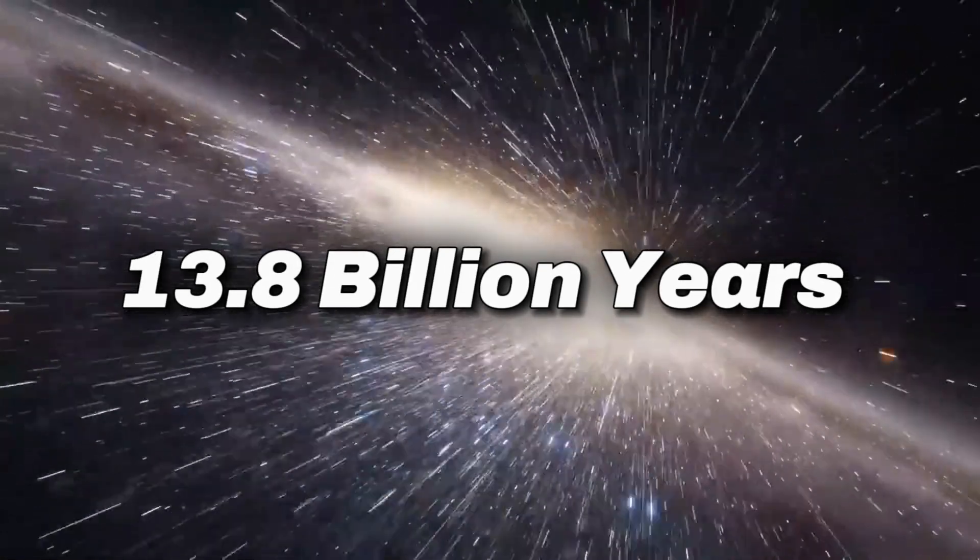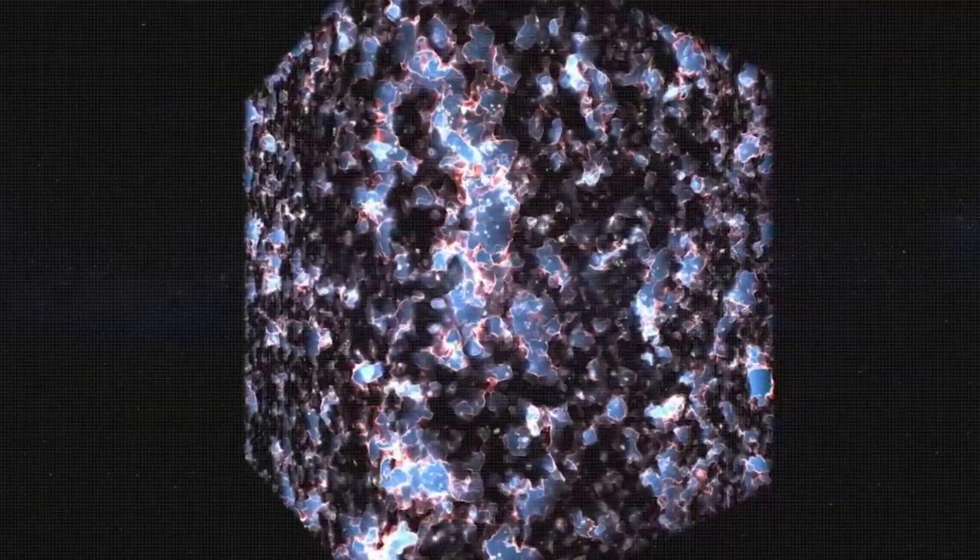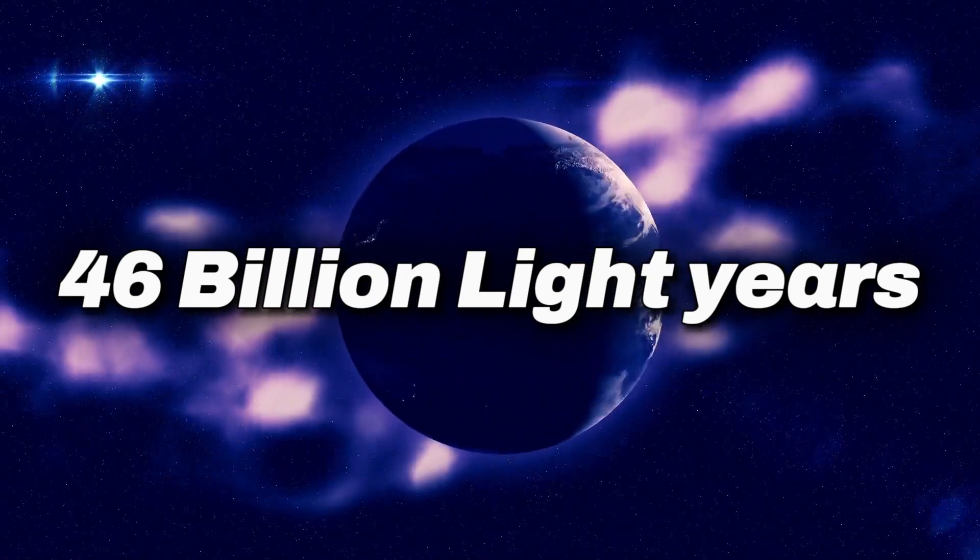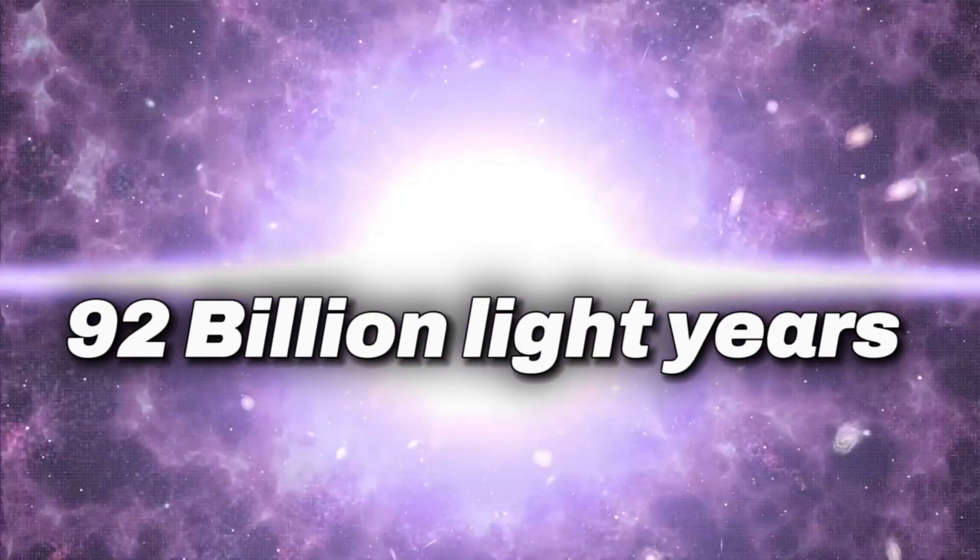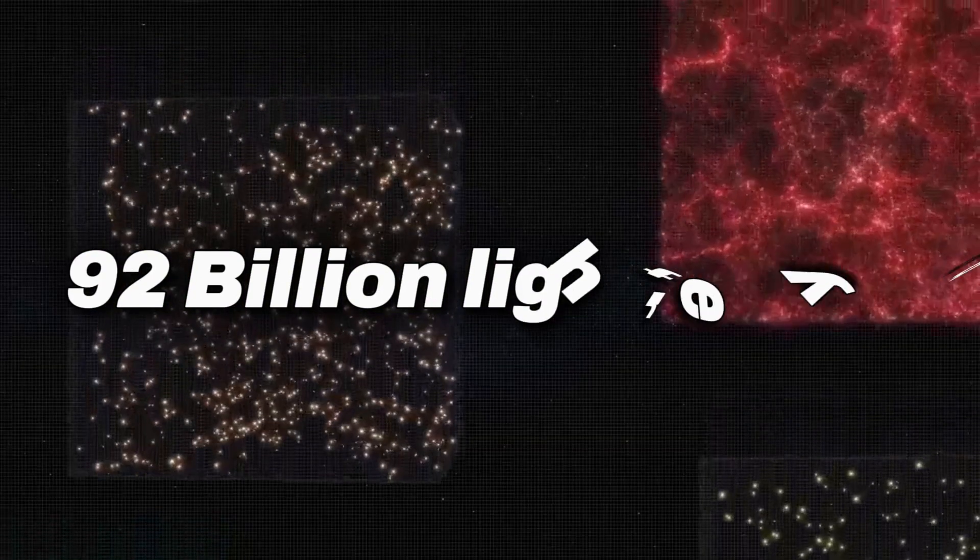Even though the age of the universe is an estimated 13.8 billion years, its observable expanse is much larger. Today, we can peer as far as 46 billion light years away from Earth in any direction. Together, this makes the diameter of the observable horizon 92 billion light years. This is because space itself expands quicker than light.